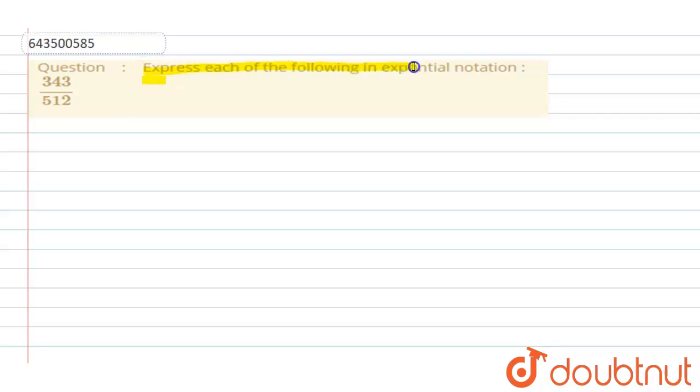...each of the following in exponential notation: given 343 upon 512. Clear? So we have to express 343 upon 512 in power notation.